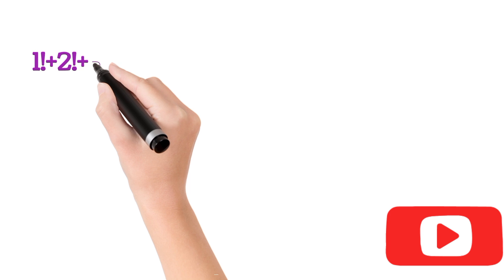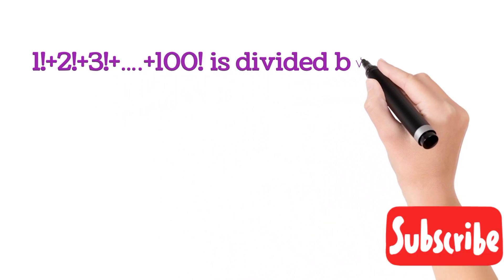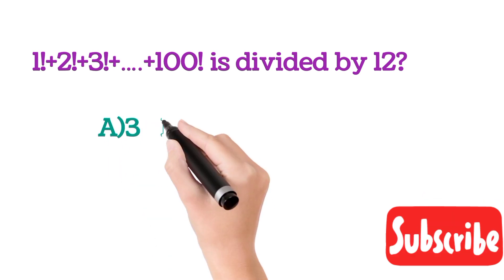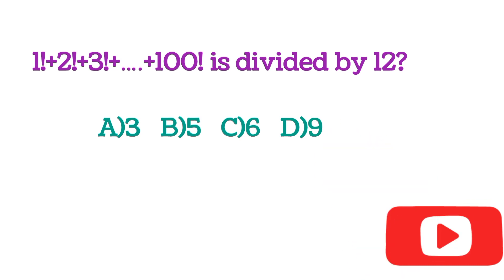Now solve: what will be the remainder if 1 factorial plus 2 factorial plus 3 factorial so on to 100 factorial is divided by 12? Options are A: 3, B: 5, C: 6, and D: 9.